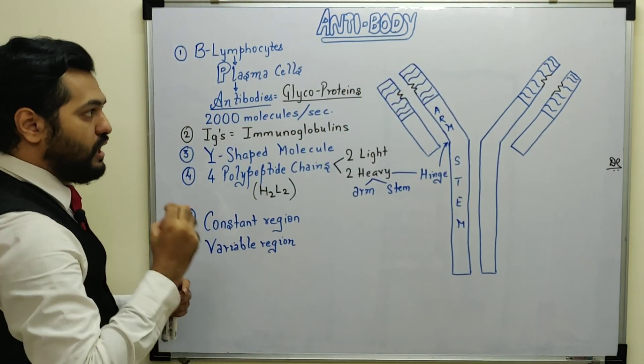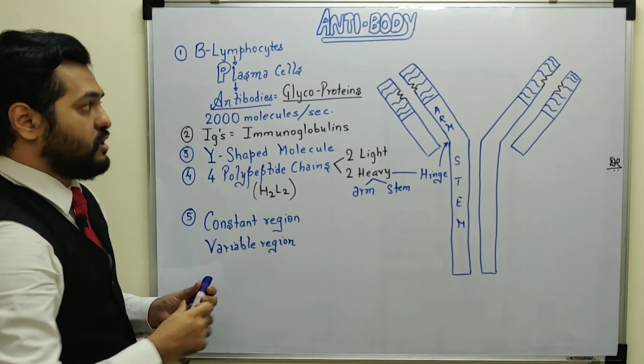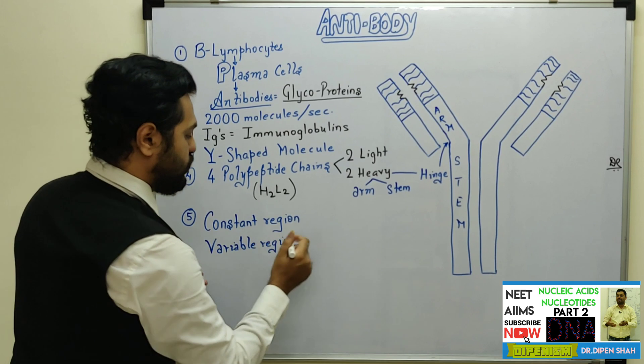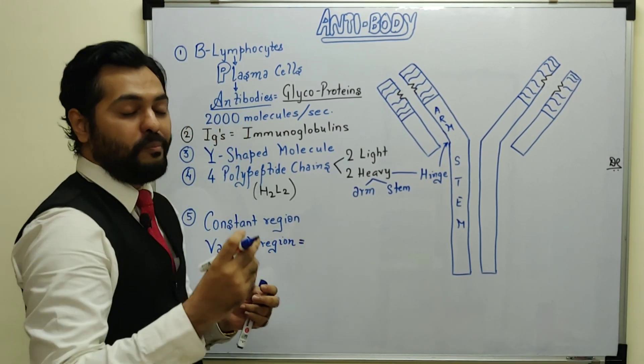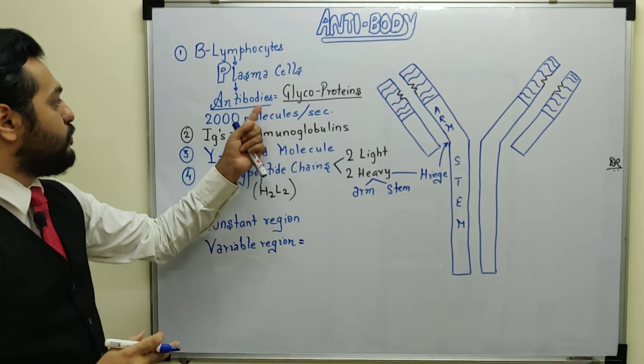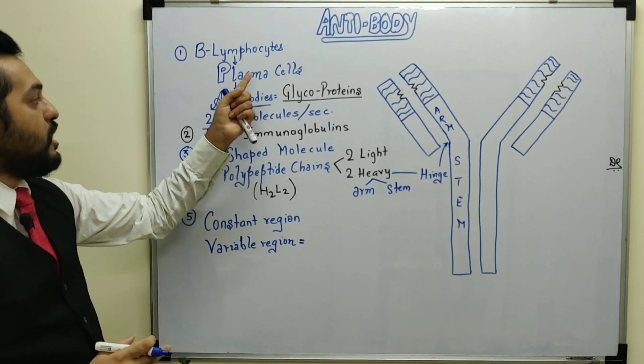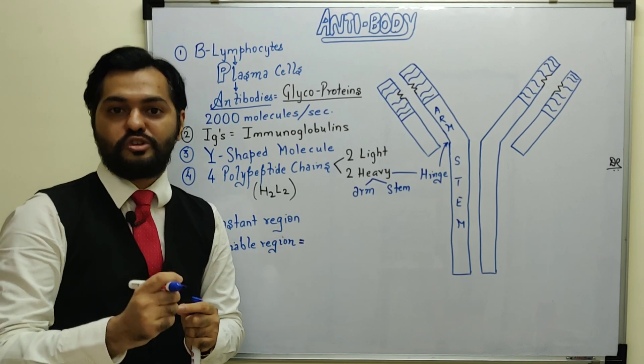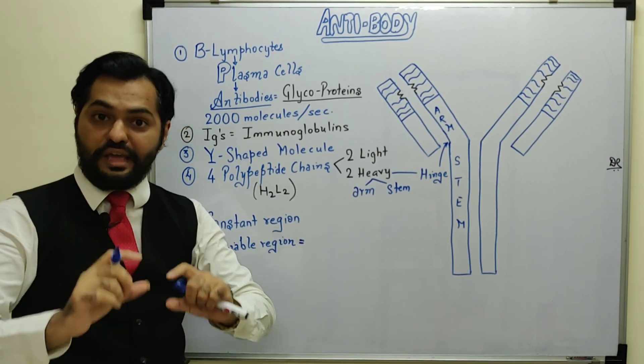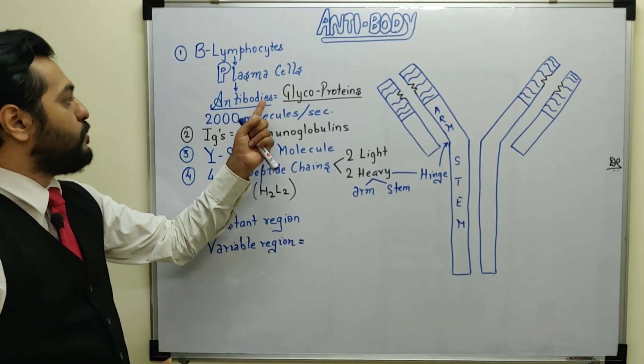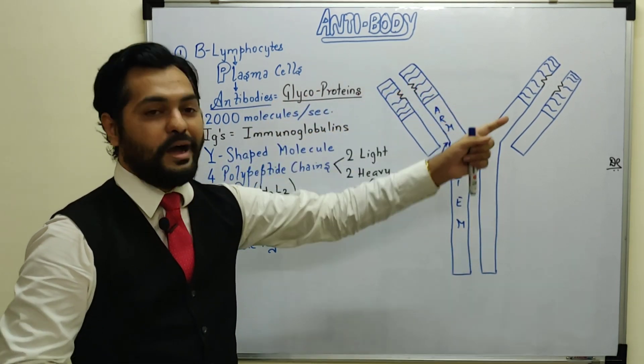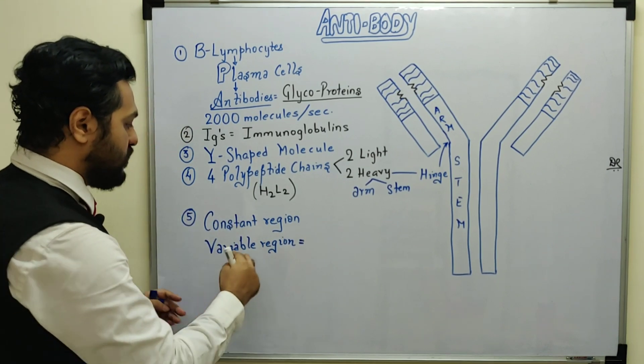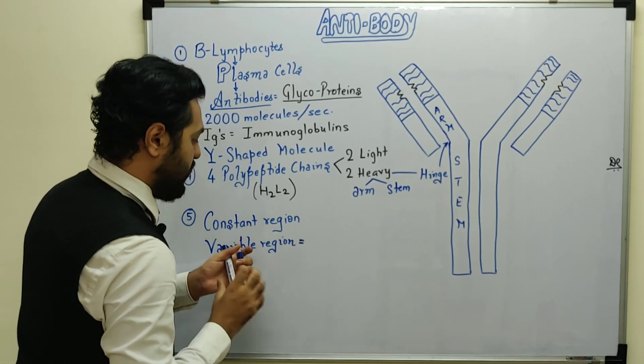The variable region creates a depression-type structure. This depression is part of the upper segment of every chain. Because of the variable region, these depressions allow binding of particular antigens.